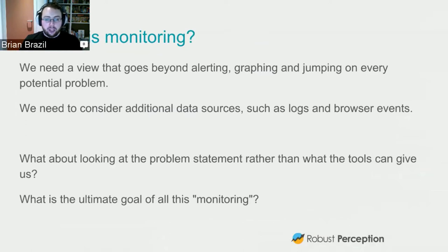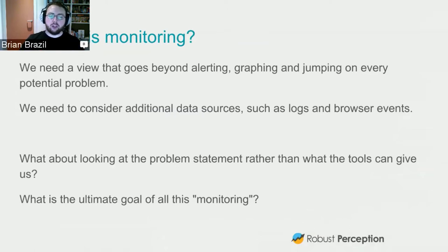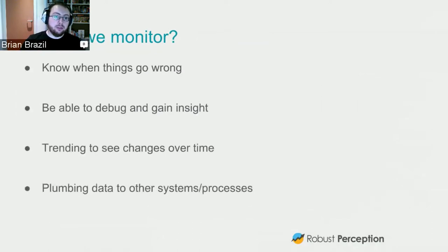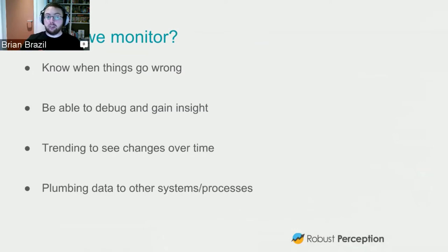Rather than looking at what the tools have, let's look at the problem statement of what we're trying to do. I see four categories of monitoring: knowing when things go wrong, debugging, trending, and plumbing. We're going to look at each in turn.